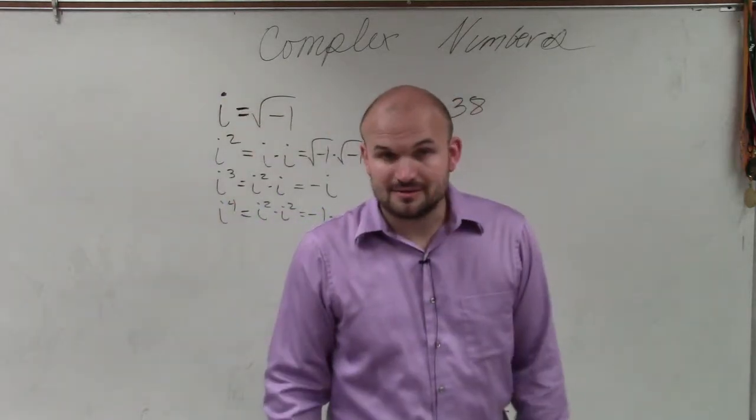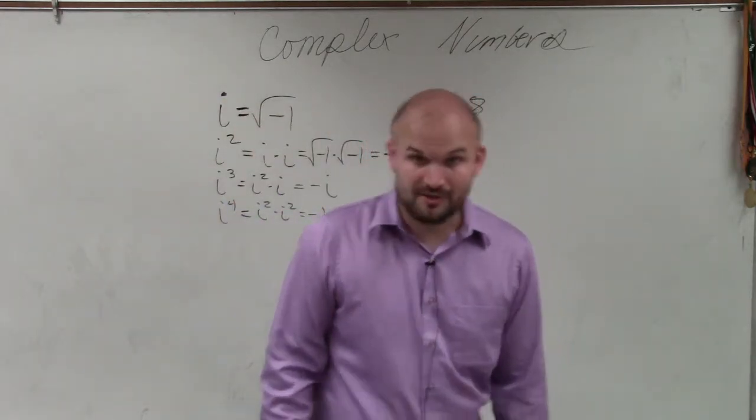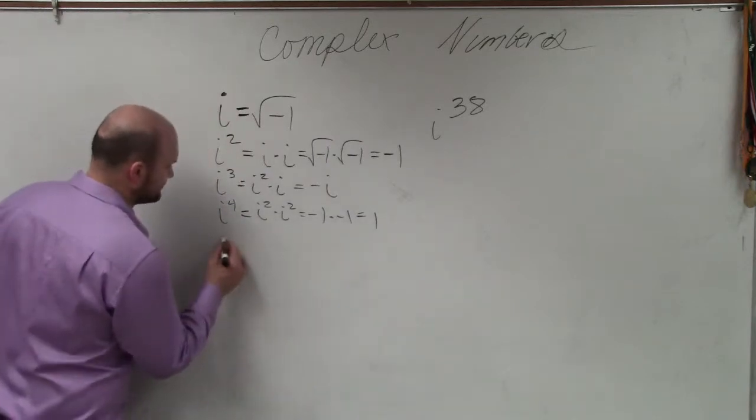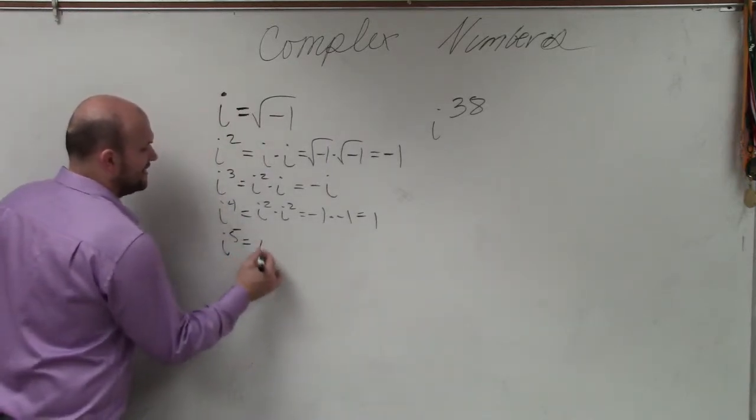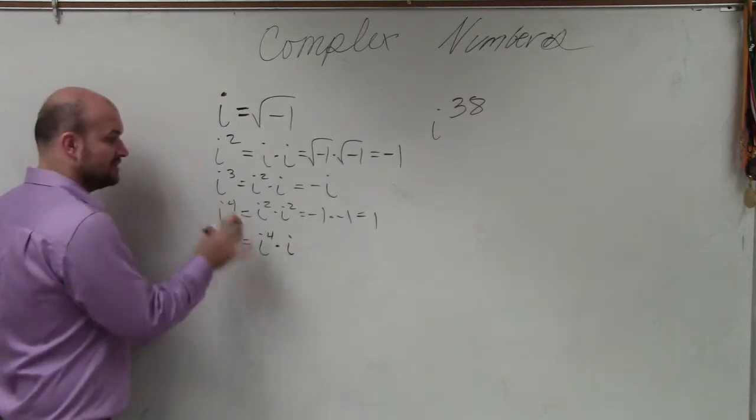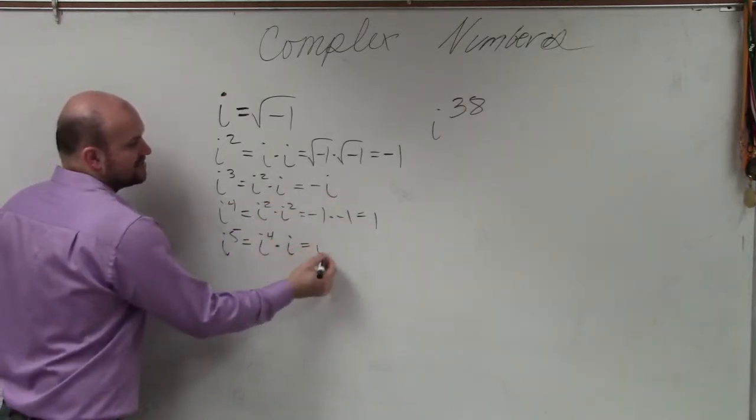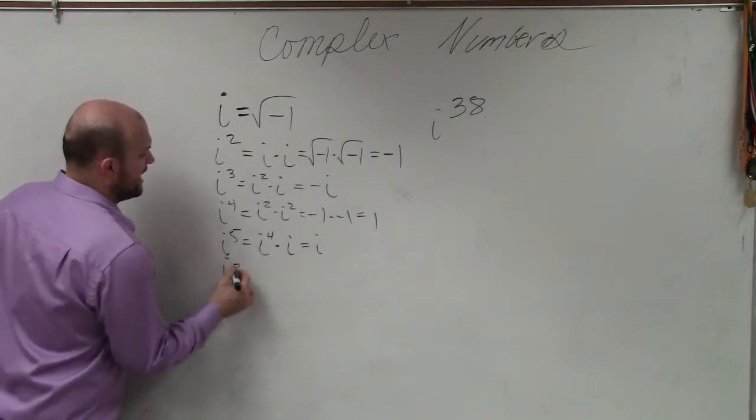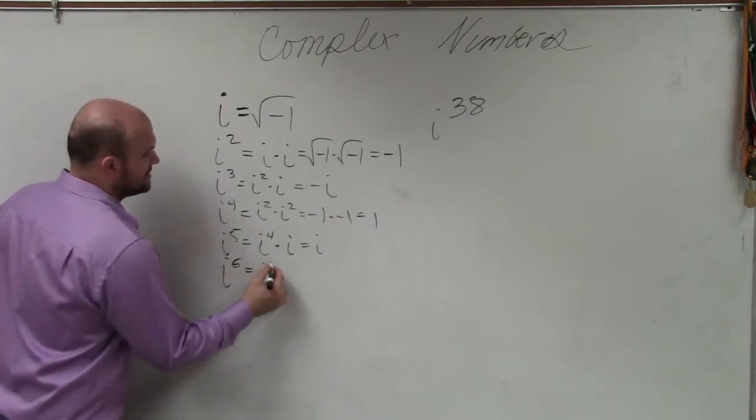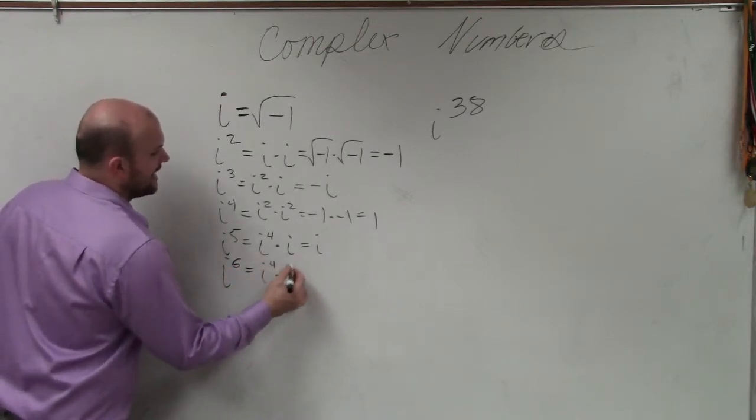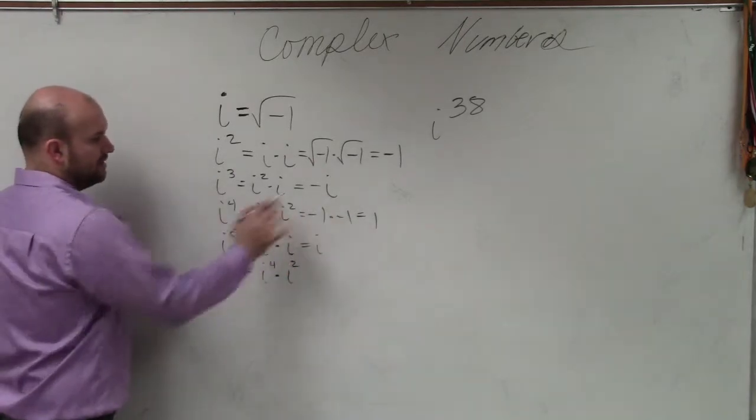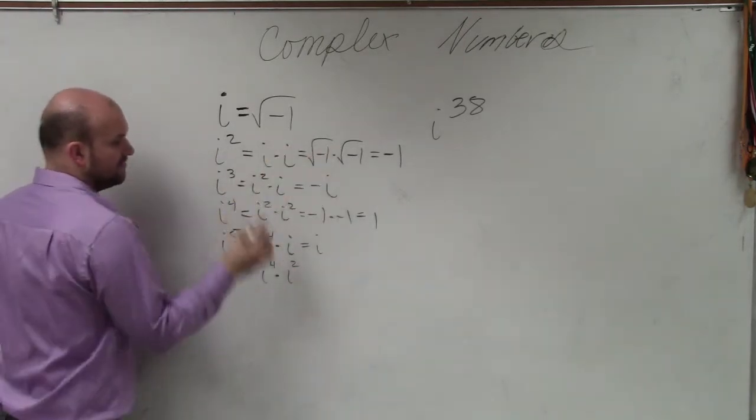So we're only at 4, guys. We need to go up to 32. i to the 5th is really i to the 4th times i. Well, fortunately, we know i to the 4th, which is 1, so times i, 1 times i is just i. If we go to i to the 6th, that's really i to the 4th times i squared. i to the 4th, we know, is 1. i squared is negative 1.